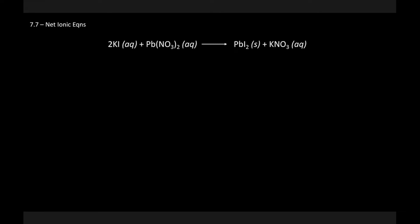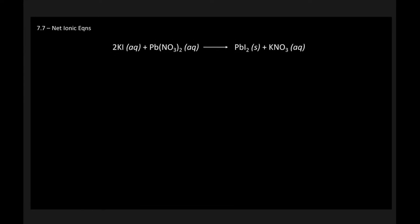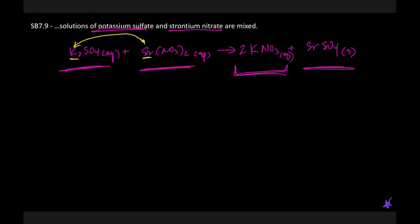Hello, Honors Chemistry, and welcome to 7.7, Net Ionic Equations, where if you take a look here, you'll see that all we have is, lo and behold, a precipitation reaction, because here is our precipitate.